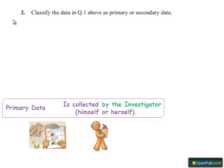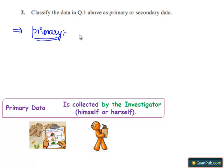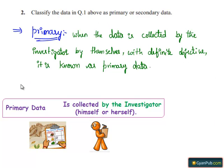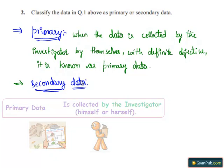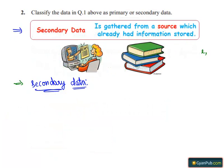Knowing what is primary data: when the information is collected by the investigator herself or himself, with a definite objective in her or his mind, the data obtained is called primary data. Secondary data: when the information is gathered from a source which already has been stored, that type of data is known as secondary data.